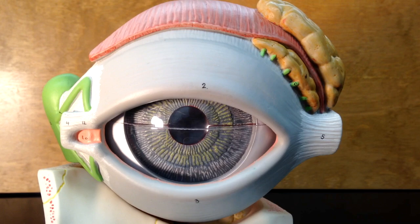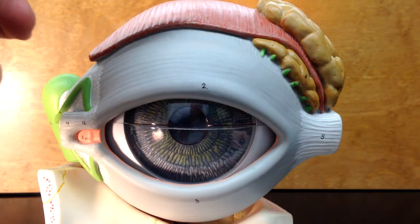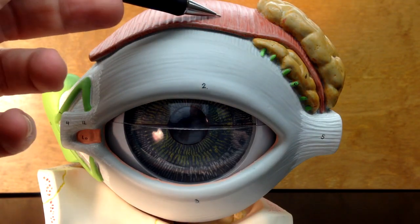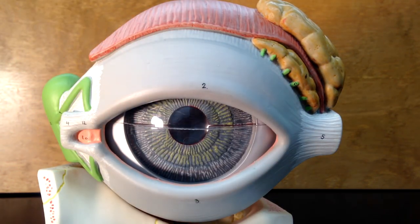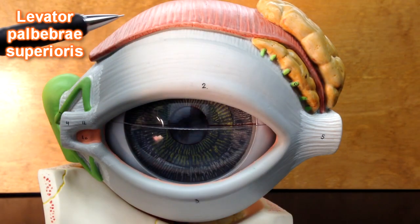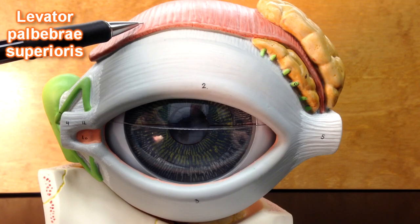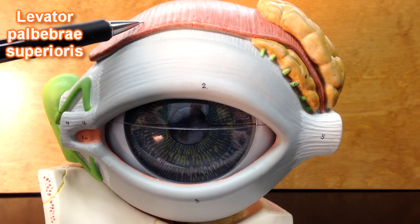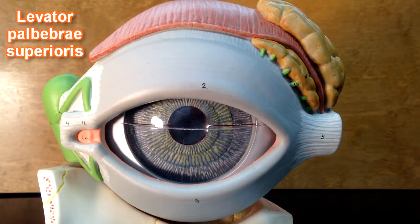Some of the other structures we can see here, this structure right up here, you can see it looks kind of muscular. That structure is going to be the muscle known as the levator palpebrae superioris. Levator palpebrae superioris is going to be the muscle in the upper eyelid, and when this muscle contracts, it will raise the upper eyelid so that we can open our eyes.